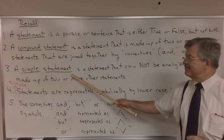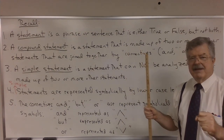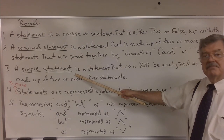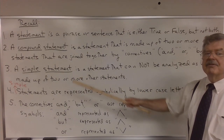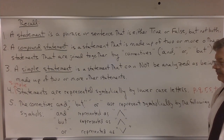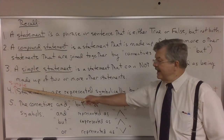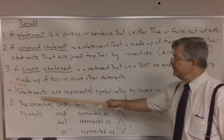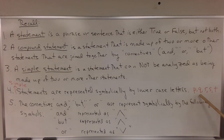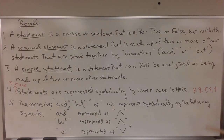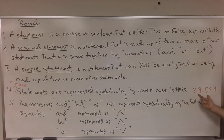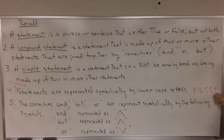We can't look at a simple statement and say it was made up of this statement and that statement. So a simple statement expresses one thought and we can't analyze it as being made up of two or more other statements. Simple statements are represented symbolically by lowercase letters. Most often we use the letters P, Q, R, S, and T to denote simple statements.